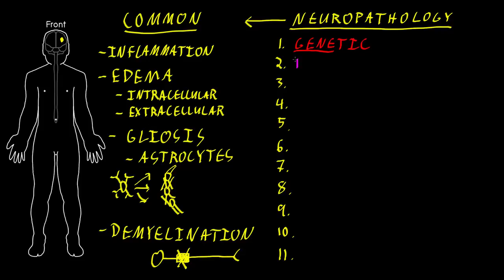The next category is called idiopathic, which is just a fancy way to say that we don't know exactly what the cause is. We may have a partial understanding, but we definitely don't have a full understanding. Many idiopathic neurological disorders involve the loss of certain populations of cells inside the nervous system, such as Parkinson's disease. We often call these degenerative disorders or neurodegenerative disorders.